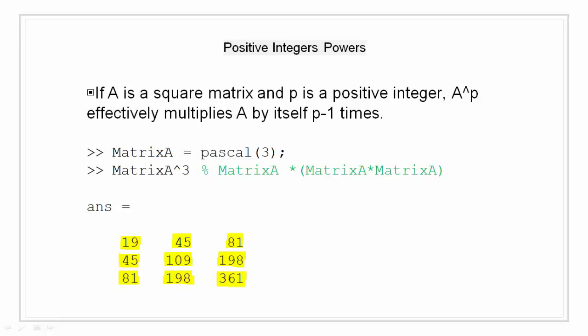Here in this example, take a matrix A, that is a 3 by 3 Pascal matrix, and I did a power of 3. So we get an answer that is highlighted in yellow. When I say I am doing a cube of matrix A, basically I am multiplying matrix A three times.